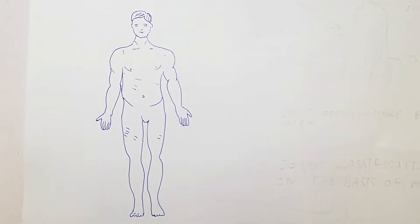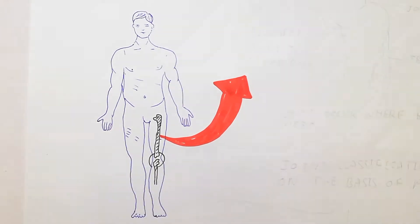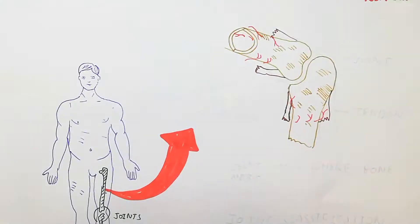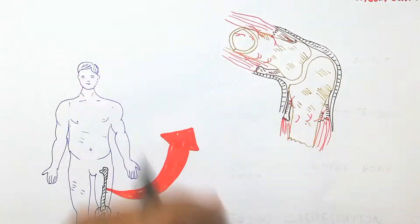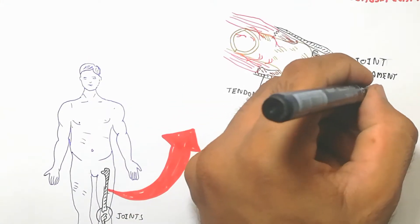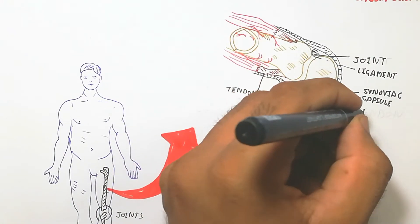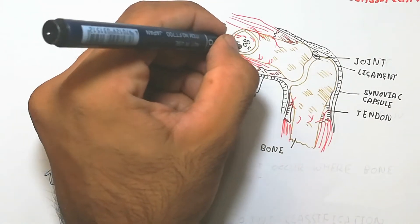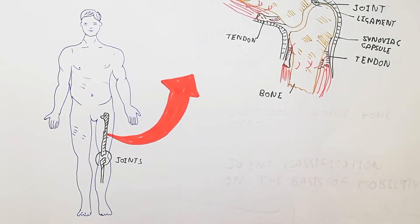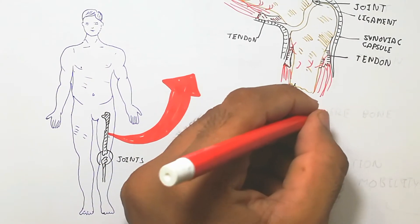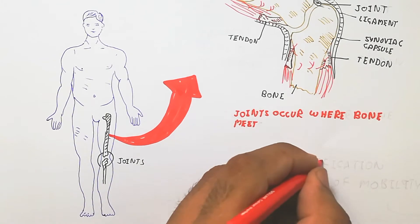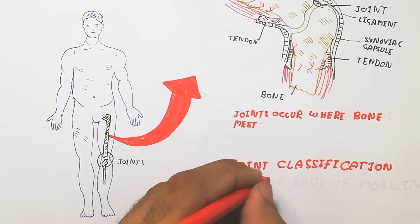Here is a person whose body contains bones, and the bones contain joints. Here is the joint — a bone attached to another bone, which contains bone marrow and blood vessels surrounded by the bone. The ligament means a bone-to-bone connection, and a tendon is a bone-to-muscle attachment. Here is the synovial capsule which contains synovial fluid. A joint occurs where bones meet — that is the definition of a joint.